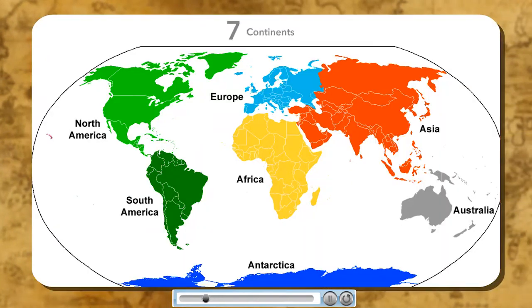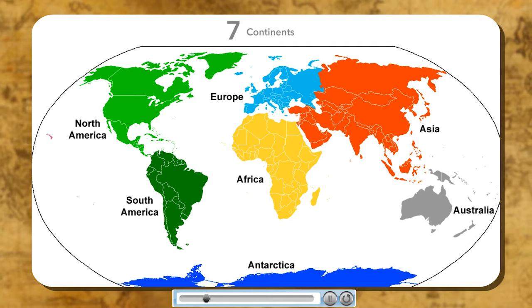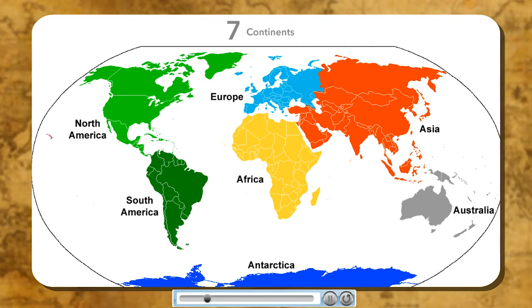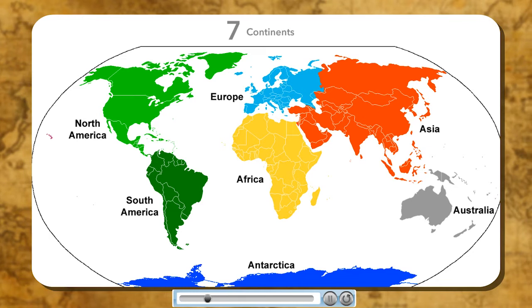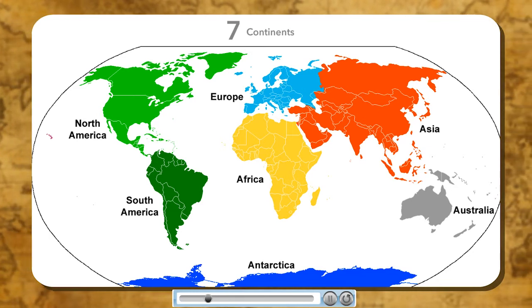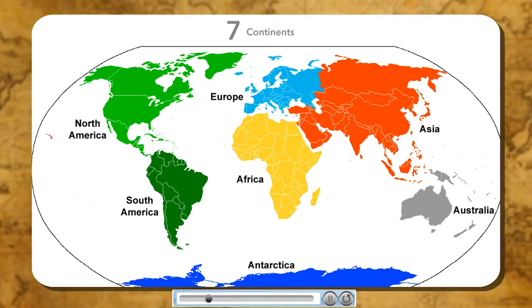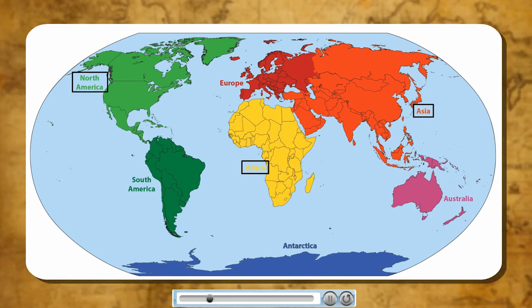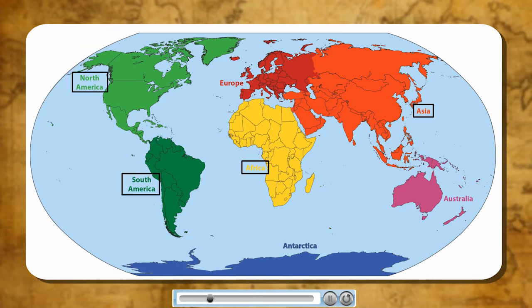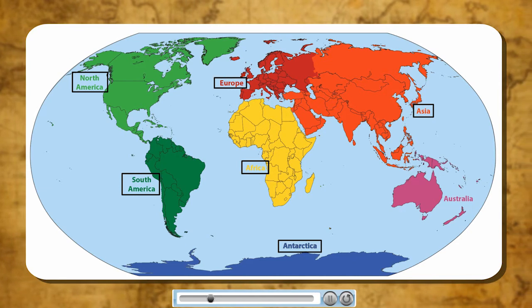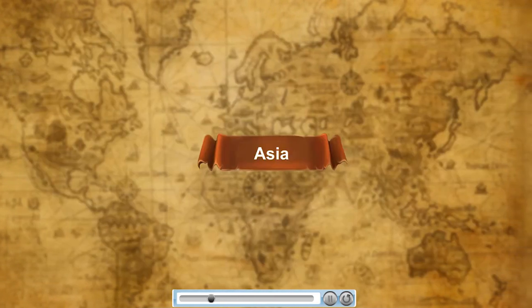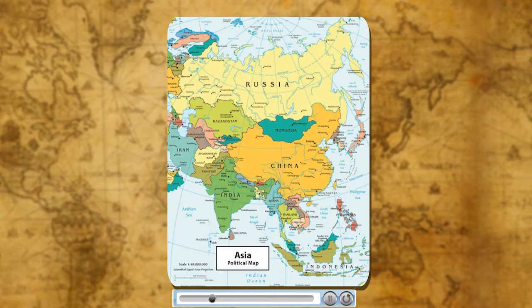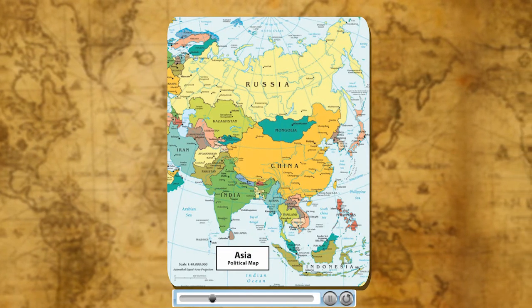Continents are huge land masses rising above the sea level and surrounded by oceans. There are seven major continents separated by large water bodies. They are Asia, Africa, North America, South America, Antarctica, Europe and Australia.